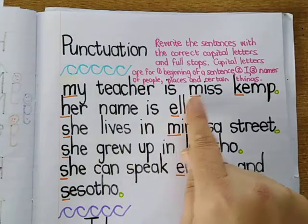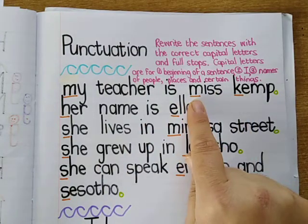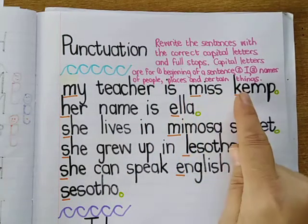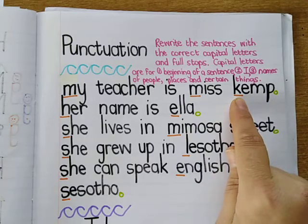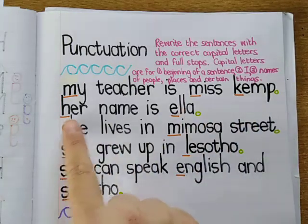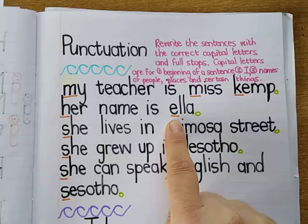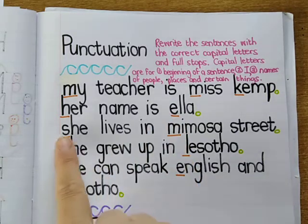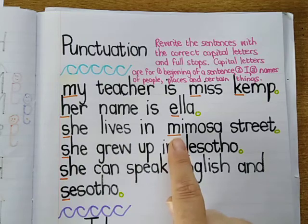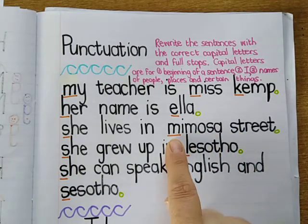Then, Miss Kemp — 'Miss' because that is what we call her, 'Kemp' because that is her surname. Her name is Ella. We know capital letters are for the beginning of a name, same as your name. She lives where? In Mimosa Street. The name of the street is Mimosa.